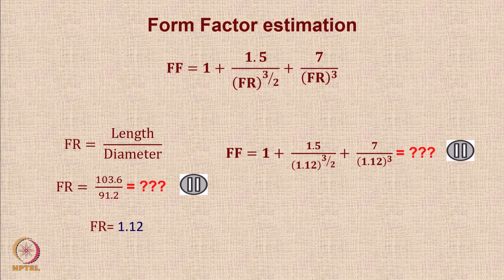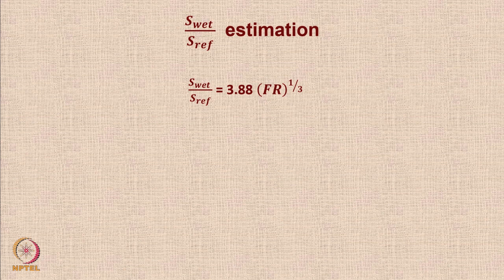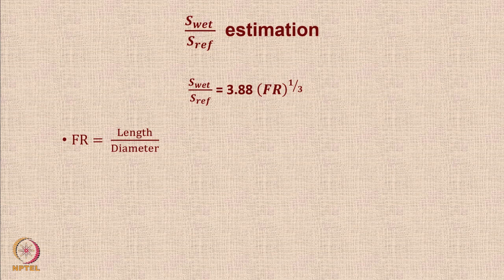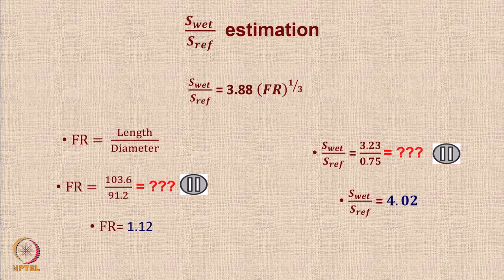The ratio S_wet / S_ref is an important parameter in drag estimation. There is a formula: S_wet / S_ref = 3.8 × f_r^(1/3), where f_r is the fineness ratio. This value comes to 4.02, meaning the wetted area of the envelope is roughly 4 times the reference area. Then C_D = Σ(C_f × FF × S_wet/S_ref), giving C_Df = 0.360. The drag value comes out to approximately 4.04 × 10⁻³ Newtons — a very, very small amount of drag.